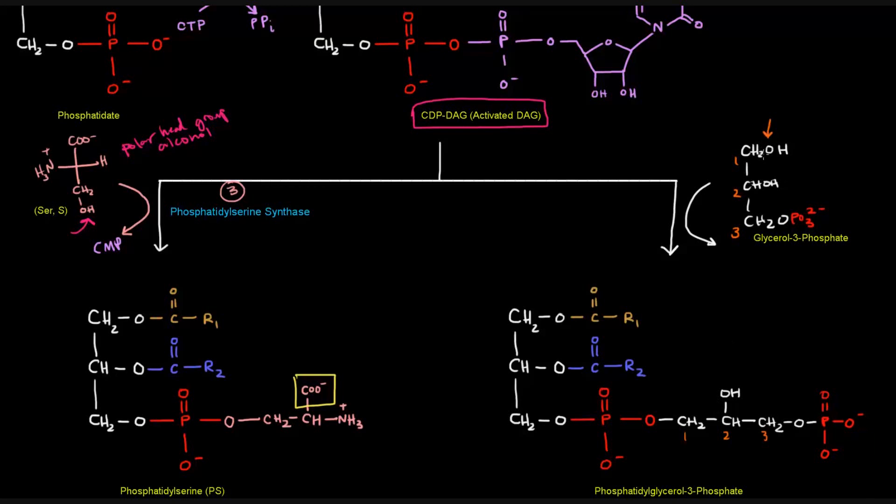But it should also make sense why this OH in particular attacked. It's the least hindered, and it's away from this negative charge. This negative charge and the negative charge on this oxygen definitely want to stay away from each other, which makes sense in the product why they're so far away. And this OH here is on the end of this molecule, whereas this OH is kind of on the carbon number two,